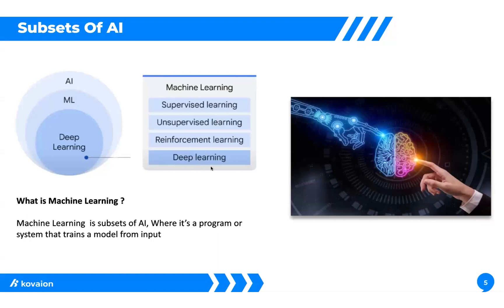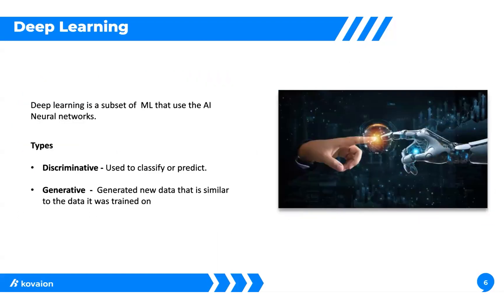Finally, deep learning. Deep learning is a subset of ML that uses AI neural networks. A neural network is similar to the human brain — it consists of nodes or neurons that perform complex pattern tasks, trained with a small amount of labeled data and unstructured data to perform complex tasks. In deep learning, we have two types: discriminative and generative.